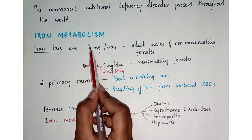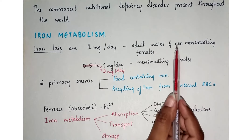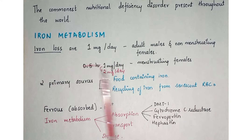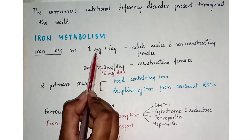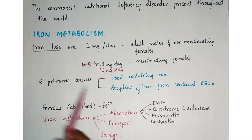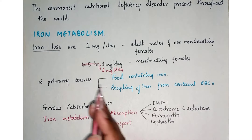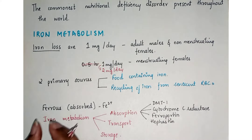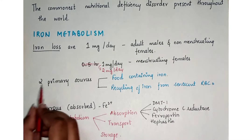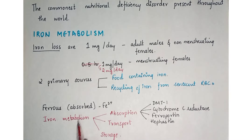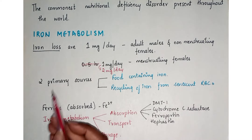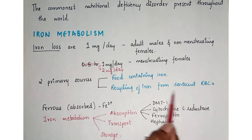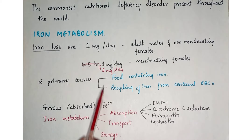Iron loss per day is usually 1 mg per day in adults and males, and in females who are not menstruating or who have attained menopause, they usually have 1–2 mg per day loss. The body has two primary sources for iron: first, the food which we eat, and second, the recycling of iron from senescent RBCs — old RBCs which are destroyed and the iron recovered from them.